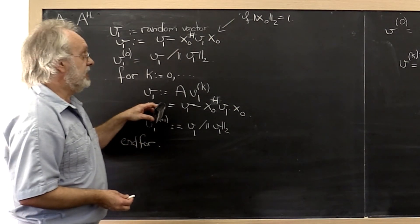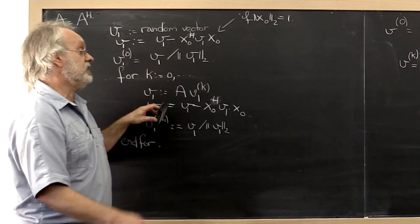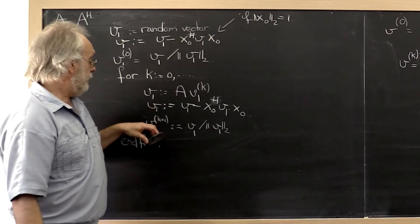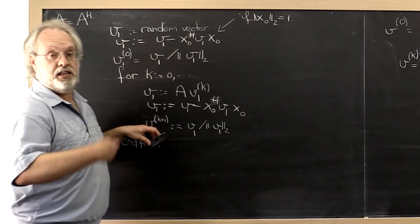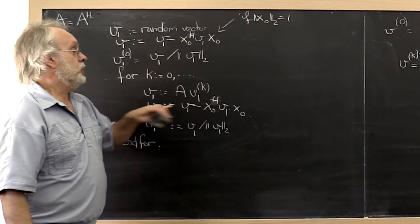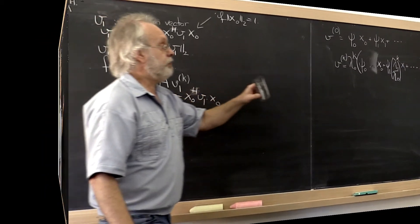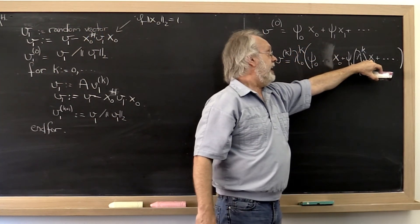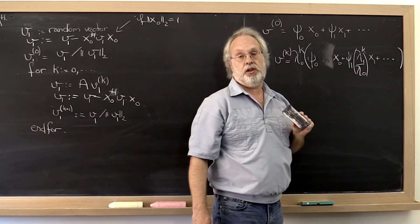And now what's happening is that even if a component sneaks in, we keep subtracting that out. Therefore the vector that we maintain will always be orthogonal, for all practical purposes, to x0. Therefore we're forcing it to home in on the eigenvector associated with lambda 1.